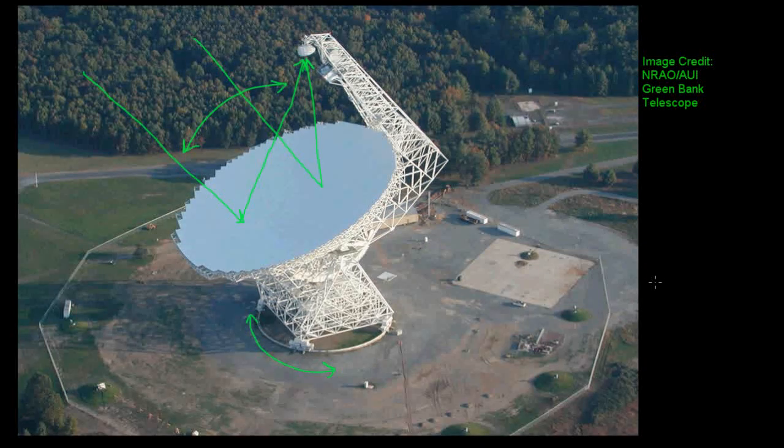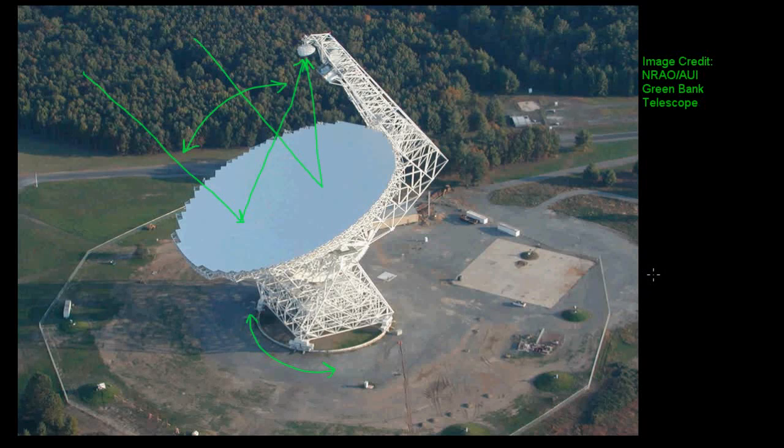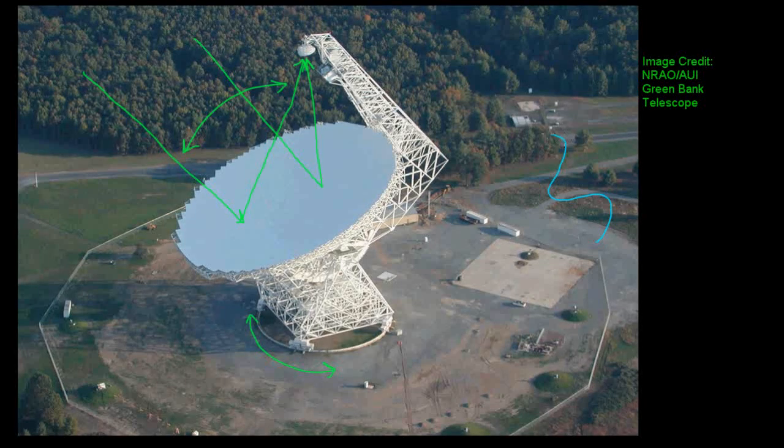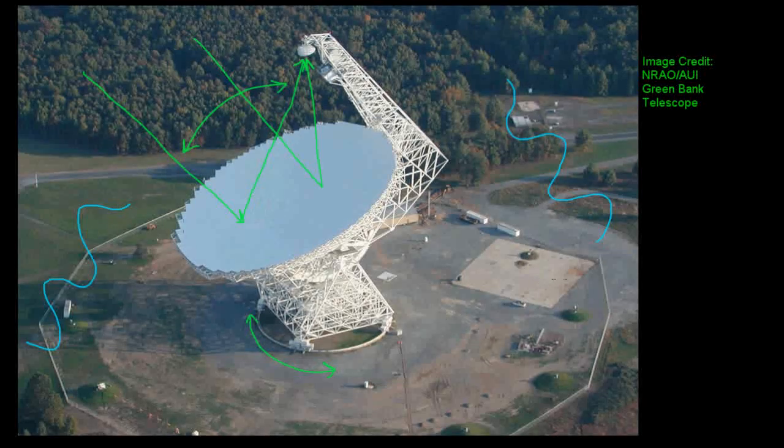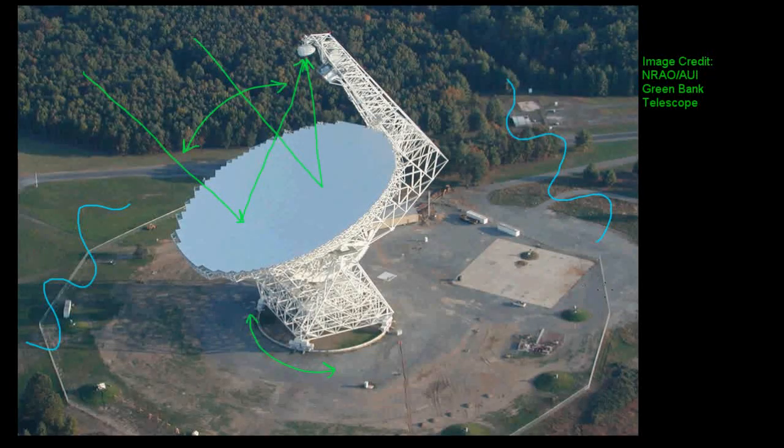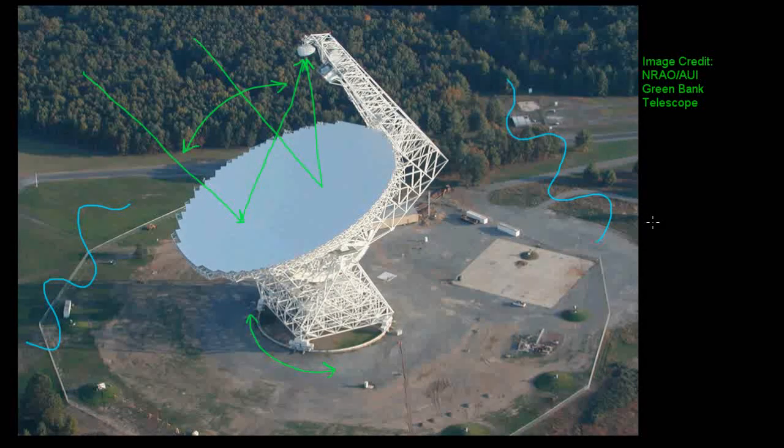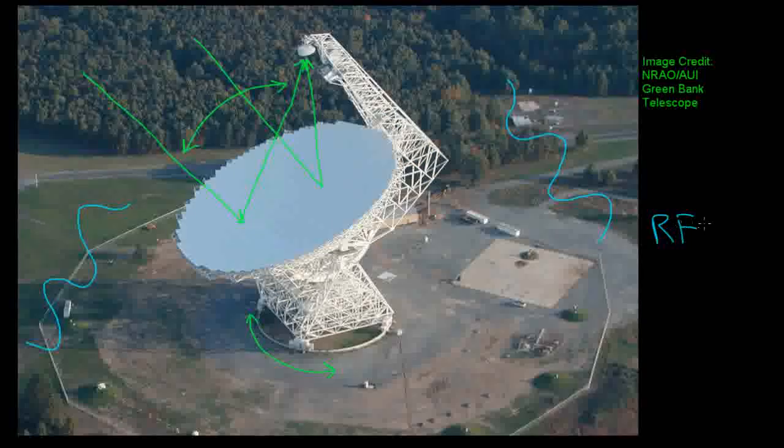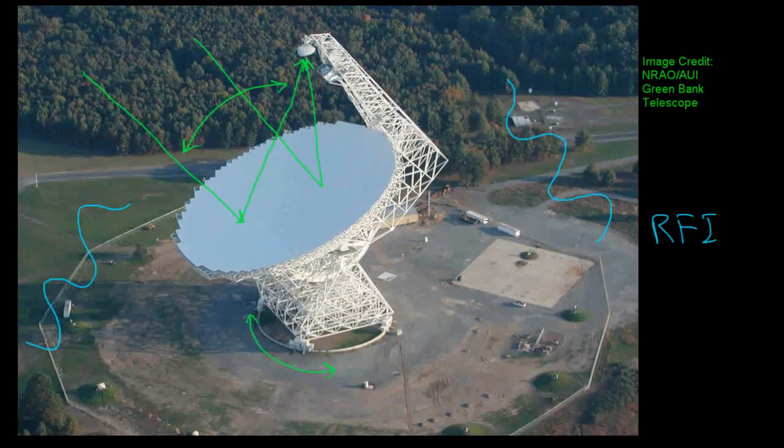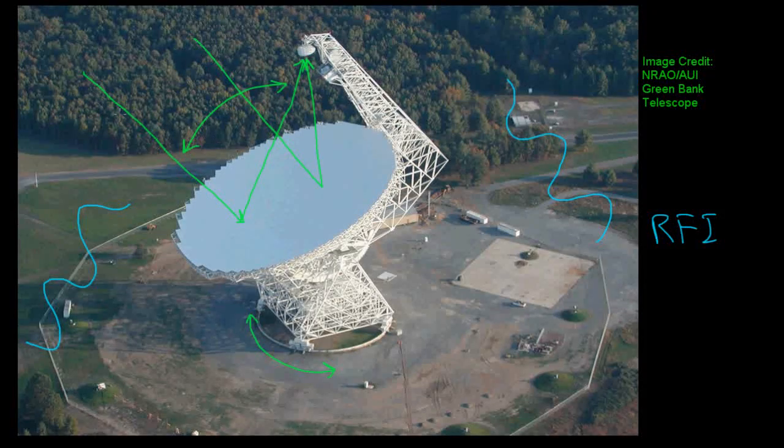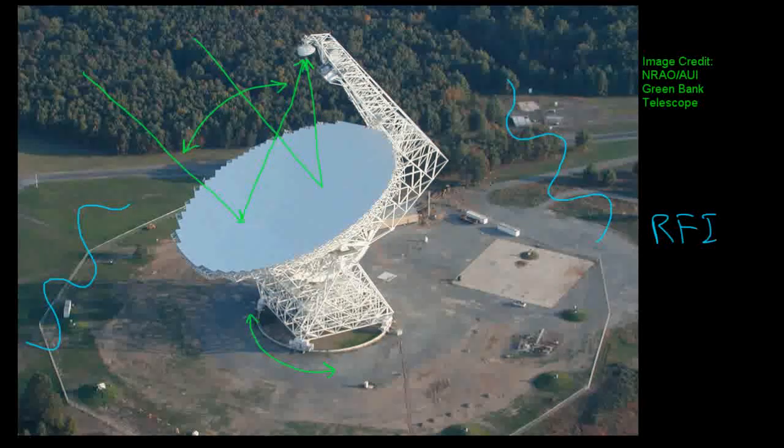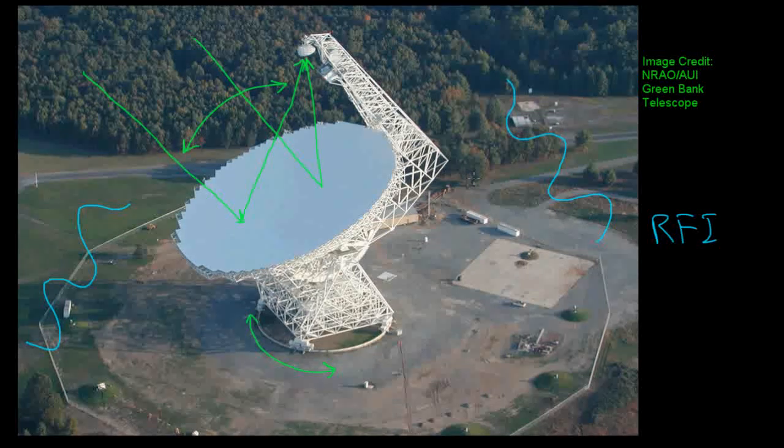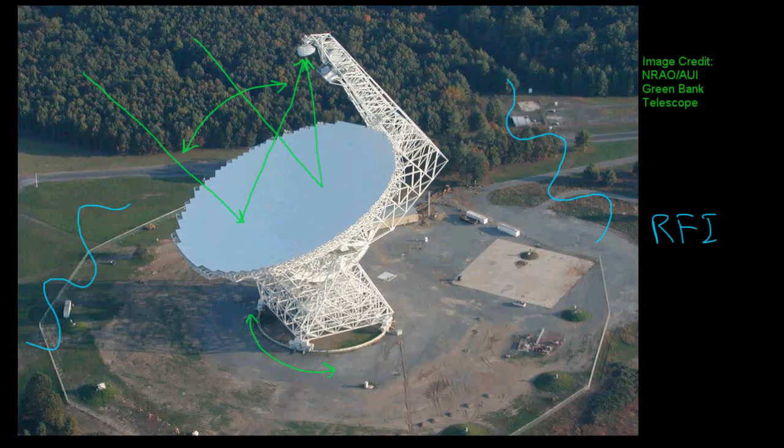Even power lines that are carrying AC current produce radio waves. So there are a lot of these sources of artificial radio waves that are filling the air around us with these different signals. And this produces a lot of background noise in our telescope that we refer to as radio frequency interference, or RFI. And this can make it very difficult to identify our faint pulsar signal from all of these different artificial sources. It's kind of like trying to hear a whisper from across a room full of talking people.